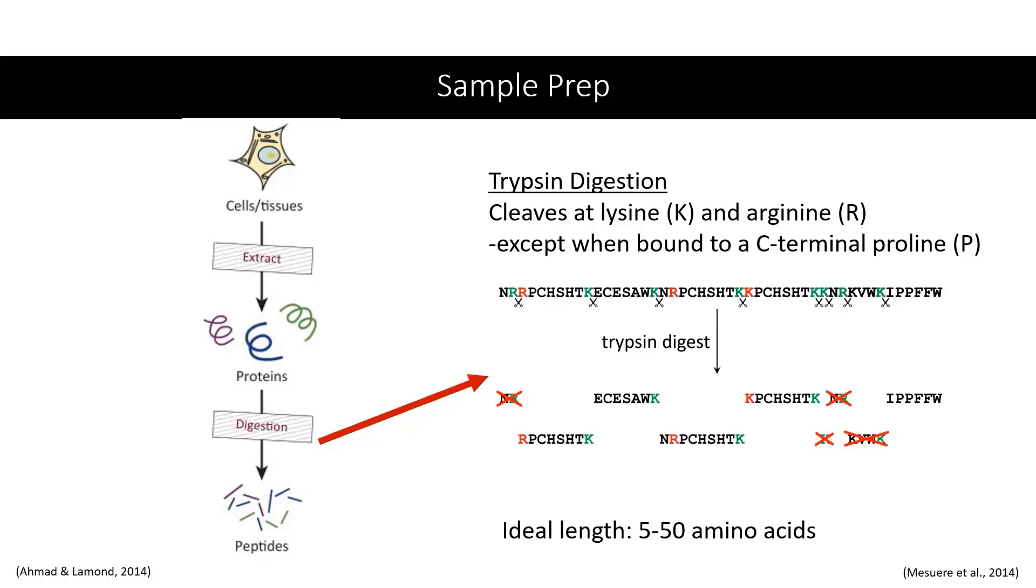Where you see scissors, trypsin is cutting after an arginine, represented by R, or after a lysine, represented by K. Now, what about these locations where there is an R or K present, but trypsin has not made a cut? Well, you'll notice that each of these is followed by a proline, represented by P, so a cut is not made.